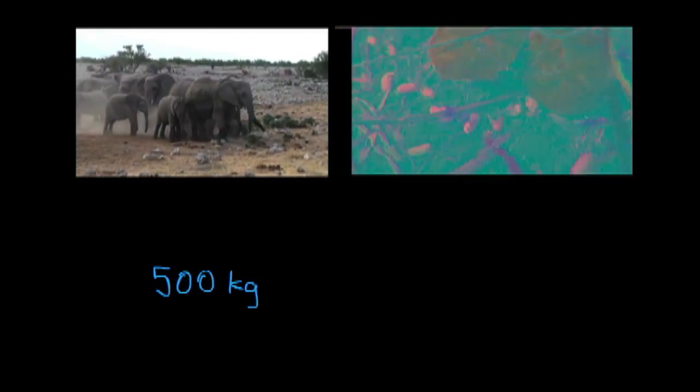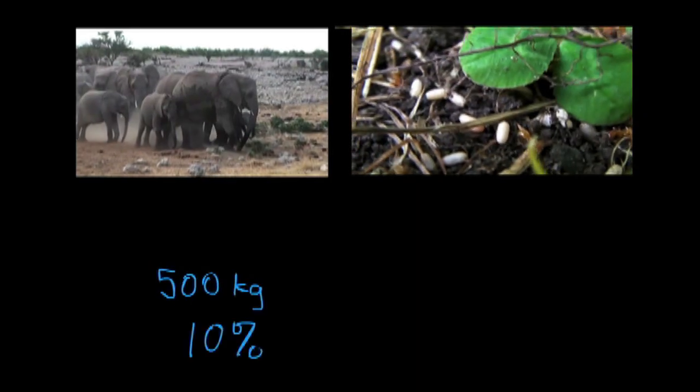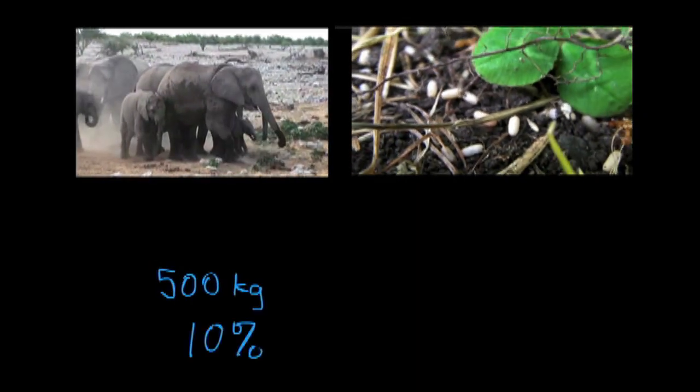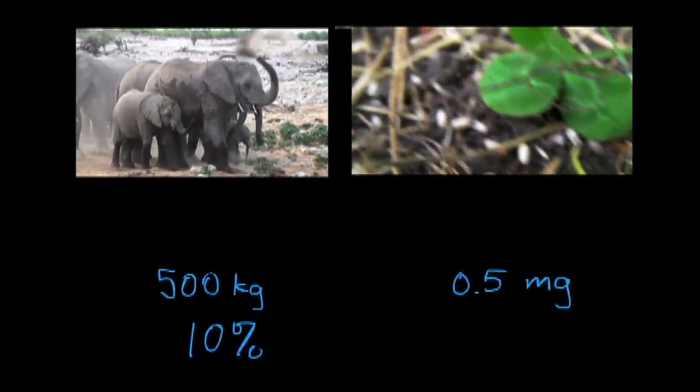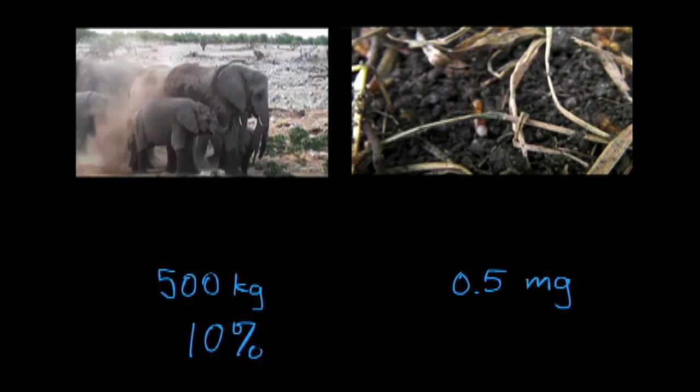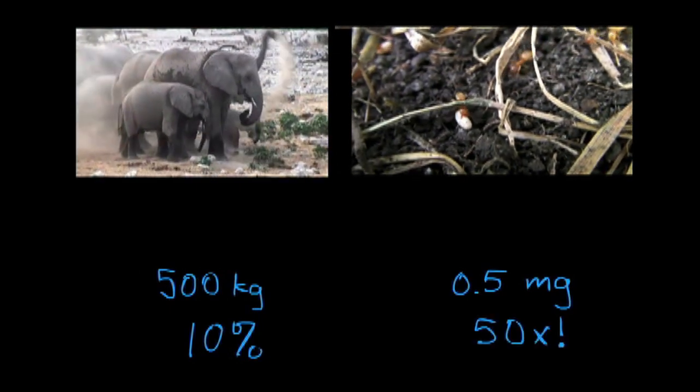An elephant can lift 500 kilograms, which is 10% of its body weight. An ant can only lift 1 millionth as much, but that amount is actually 50 times its body weight.